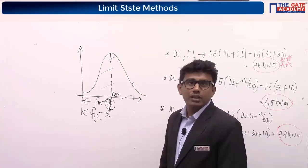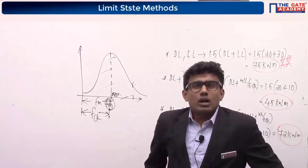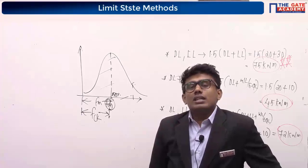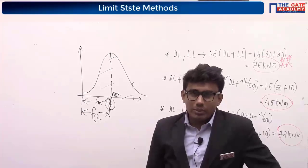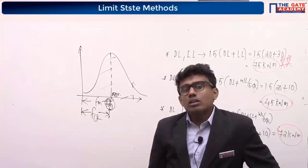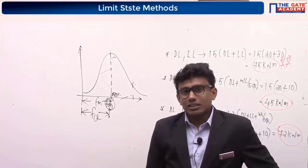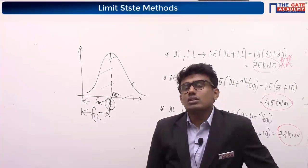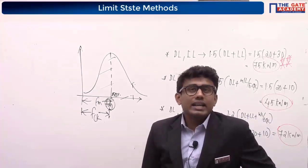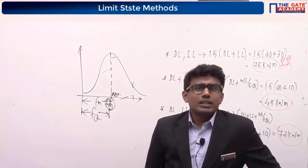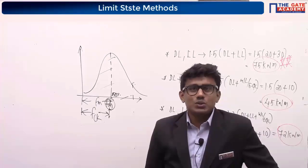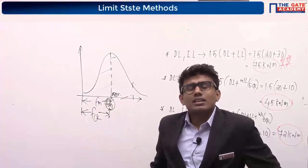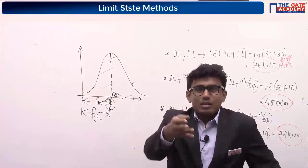Regarding why n minus 1 is used: our IS code recommends using a minimum of 30 samples for load calculations. When fewer than 30 samples are available, the standard deviation equation is modified to use n minus 1 instead of n. You can find this equation in IS 456:2000.